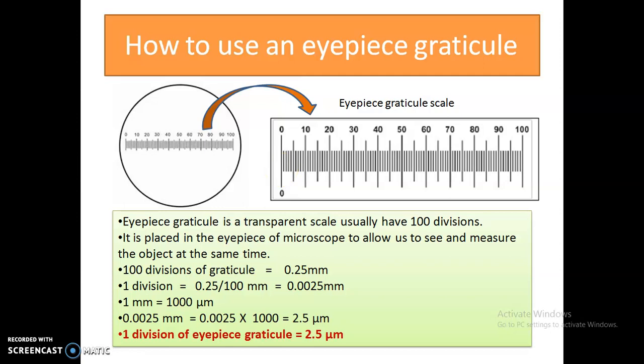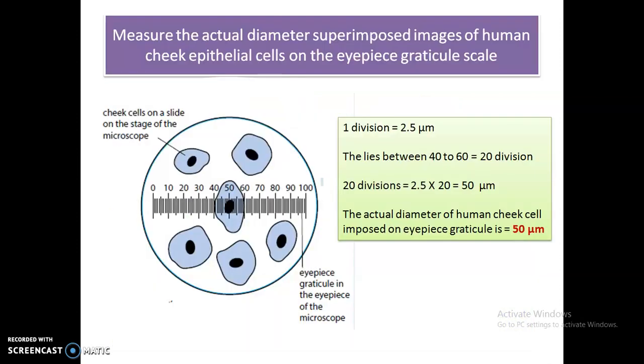This value of 2.5 micrometers per division is important to memorize, as it will help us calculate the actual length of objects we are observing through the microscope. Now we are going to use this to measure the actual diameter of a human cheek cell observed through the eyepiece graticule.